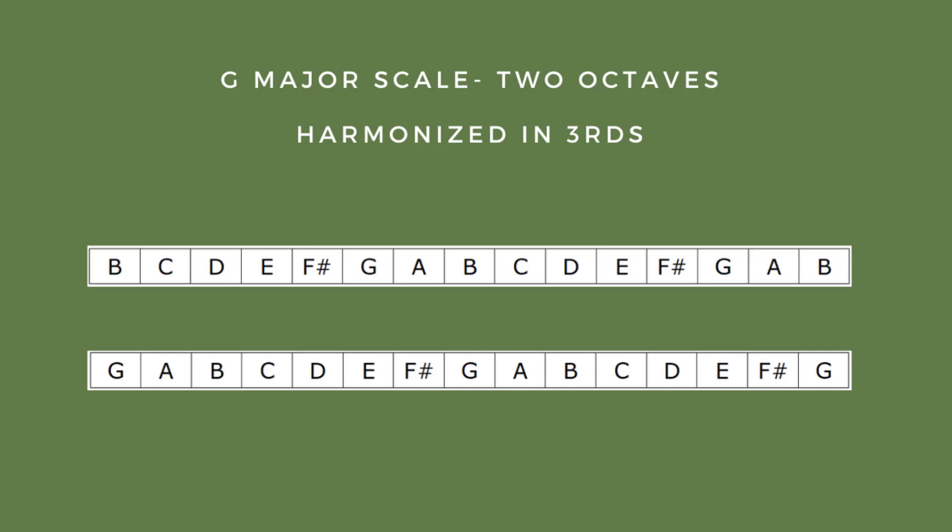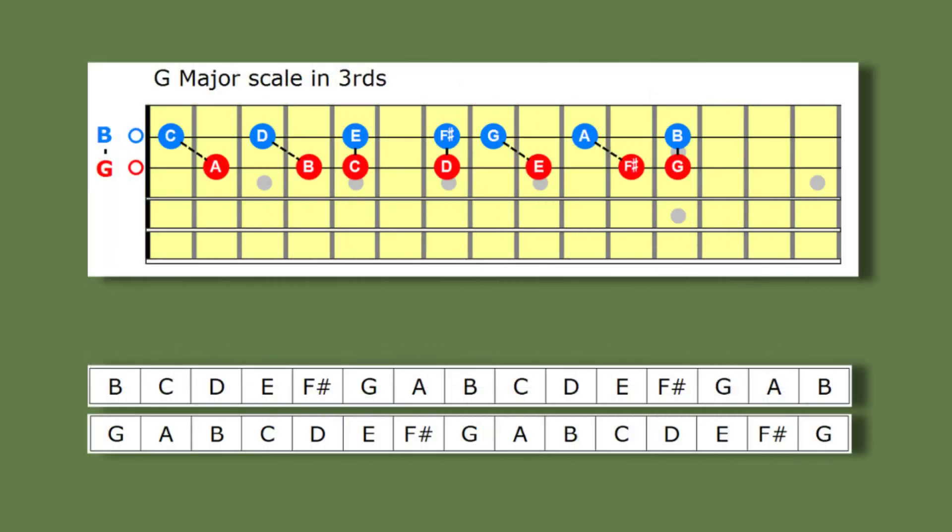And now here's how that would look on the guitar. The red notes are the original notes of the G major scale, and the blue notes are the harmony notes a third higher.